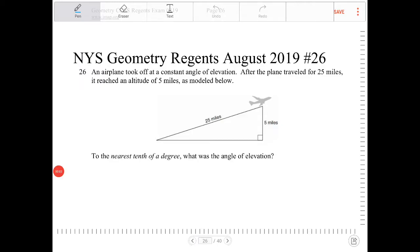An airplane took off at a constant angle of elevation. After the plane traveled for 25 miles, it reached an altitude of five miles as modeled below. To the nearest tenth of a degree, what was the angle of elevation?